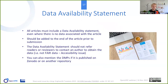You always need to include data availability statements — all articles need one, even when there is no data associated with the article. It should be added to the end of the article prior to submission. Saying 'send an email to the corresponding author' is not accessible in terms of FAIR principles — data must be on a trusted repository. However, it doesn't have to be open: it can be under embargo for, say, two years, or completely closed for security or personal data reasons.